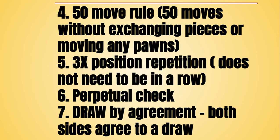Number six is a perpetual check. Basically you're checking the opponent and that's all you can do — check, check, check, check — and that would be considered a draw.